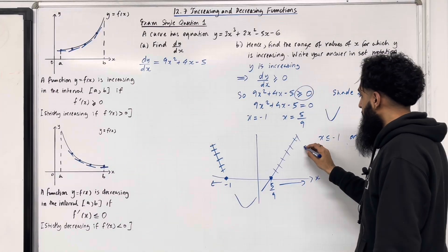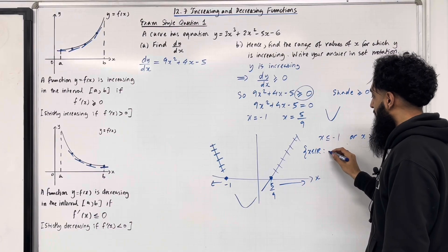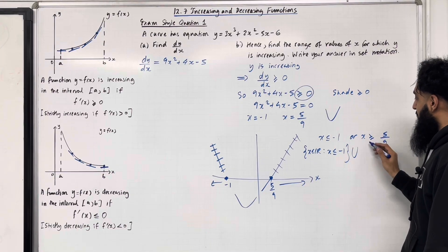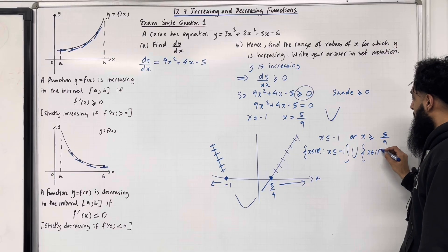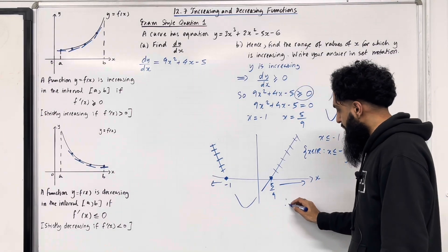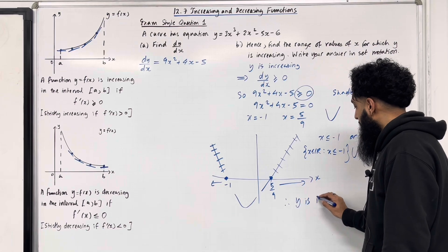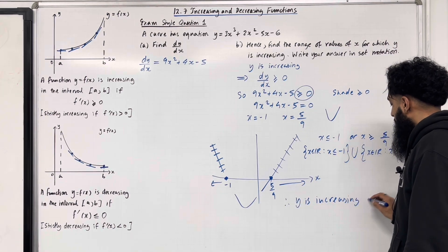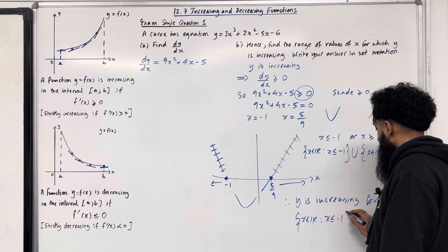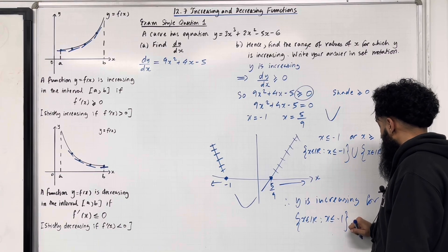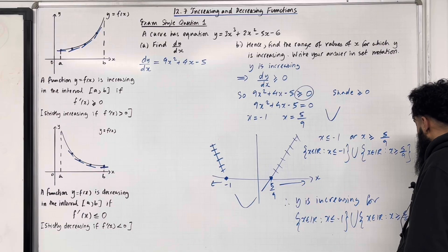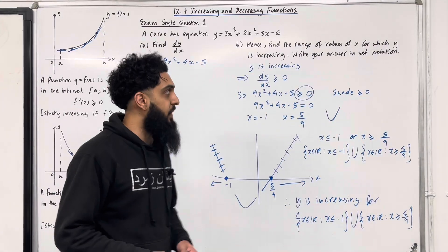We must write our answer in set notation. The first part in set notation is: x ∈ ℝ such that x ≤ -1. In set notation, 'or' is union. The second part in set notation is: x ∈ ℝ such that x ≥ 5/9. Therefore, y is increasing for the union of those two sets. That completes exam style question 1.